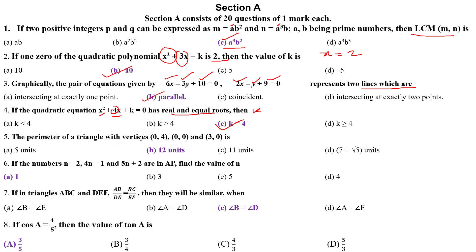The perimeter of a triangle with vertices (0,4), (0,0) and (3,0). My dear students, first you find out the distance of this point, distance of this point, then distance of this point. Then you find out the perimeter. Distance formula is root of x2 minus x1 whole squared, y2 minus y1 whole squared. When you add all these three sides in a triangle, then the perimeter will be 12 units.